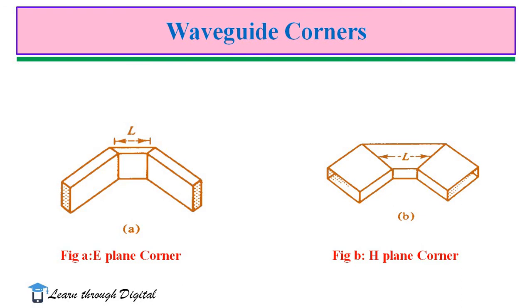Here, in this corner, the bending is a sharp bending introduced in the direction of the electric field vector. That is why it is called as E-plane corner.